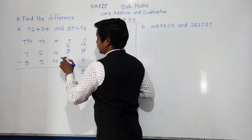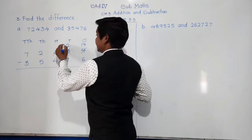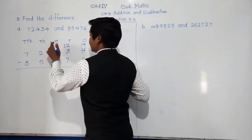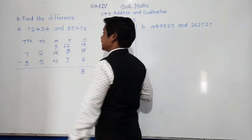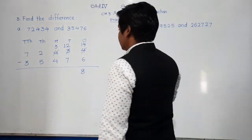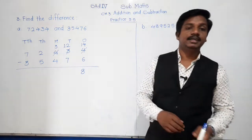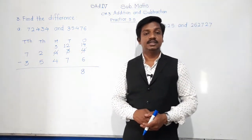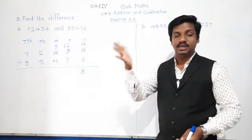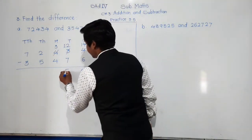At tens place: 2 minus 7 — not possible. Borrow from hundreds: hundreds digit 4 becomes 3, tens become 12. 12 minus 7: count after 7 till 12 — that gives 5 fingers, so 12 minus 7 is 5.